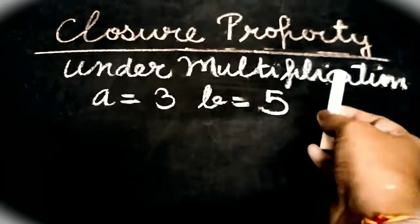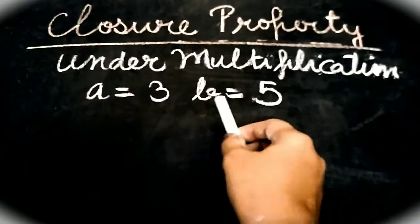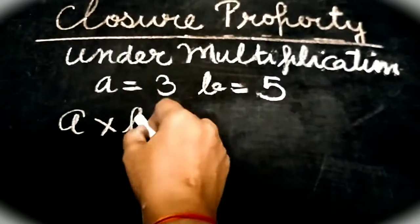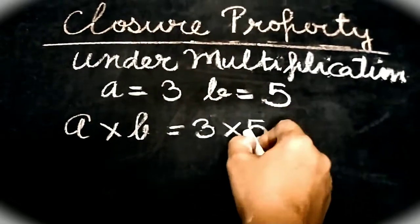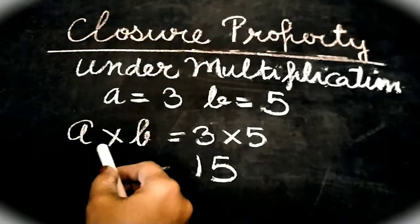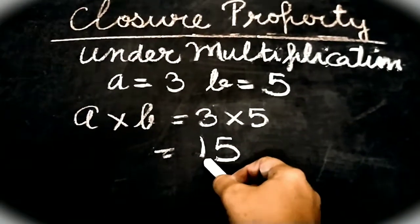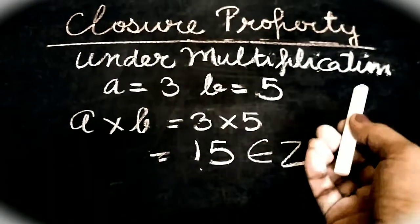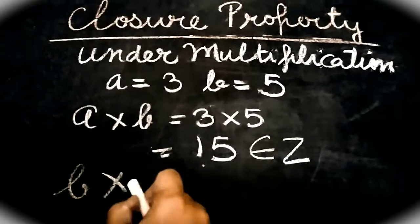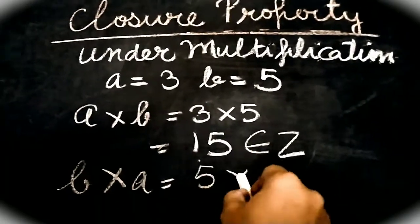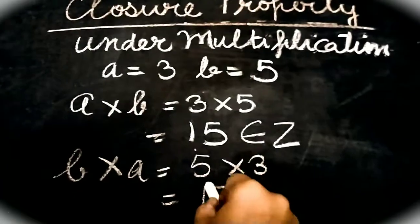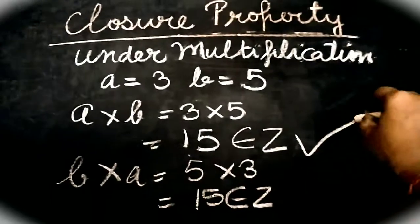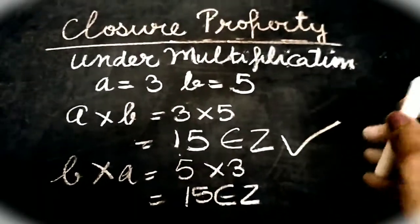Now we are going to check the closure property under multiplication with the same numbers: A as 3, B as 5. So A into B means 3 into 5, which is equal to 15. The product should be an integer — 15 is definitely an integer. Same goes for B into A, which is 5 into 3, which is again 15. So the closure property holds under multiplication.